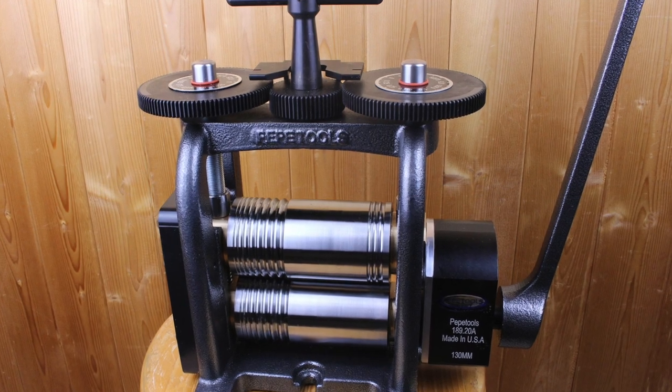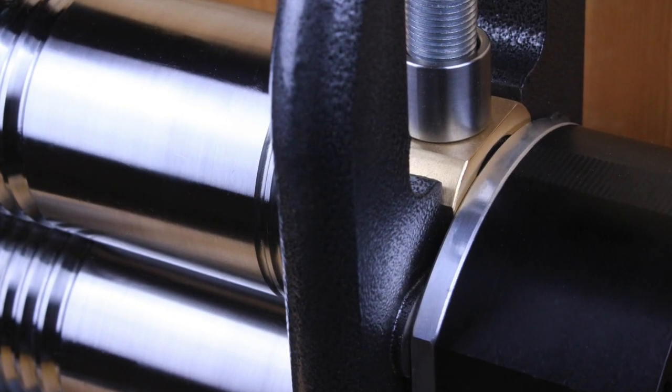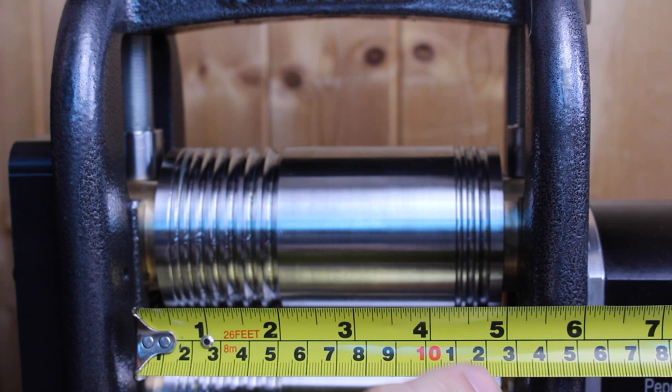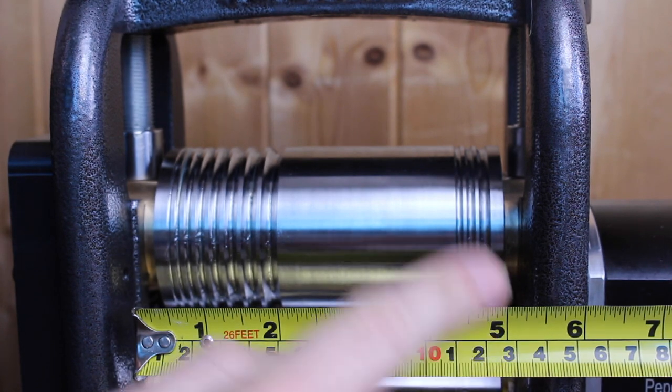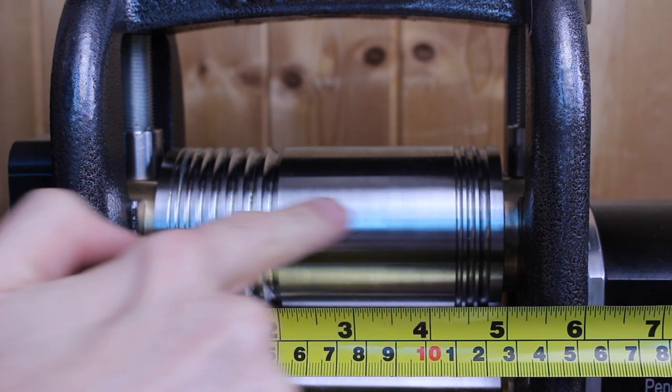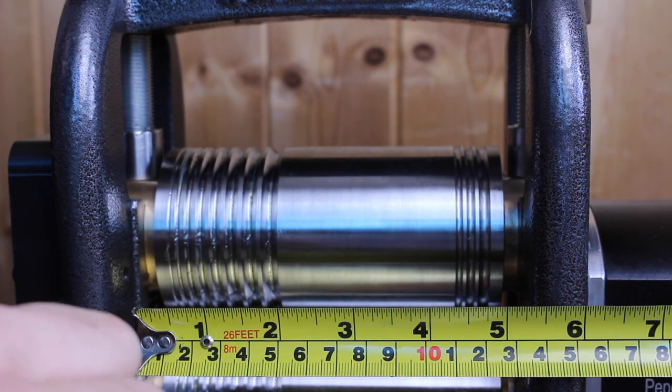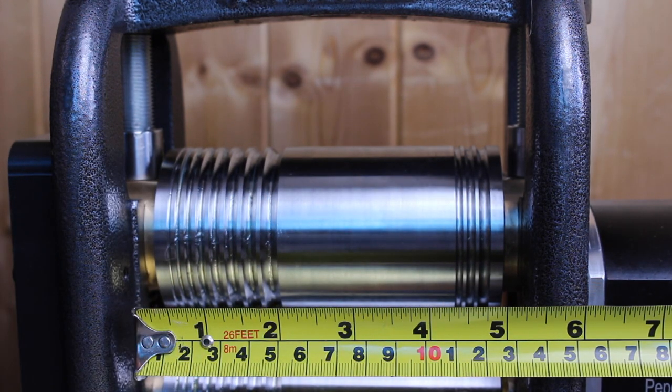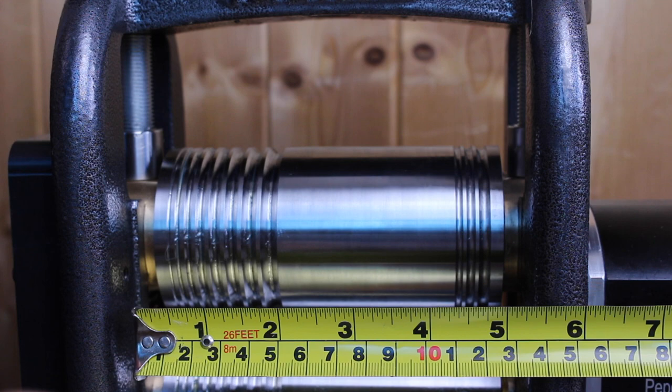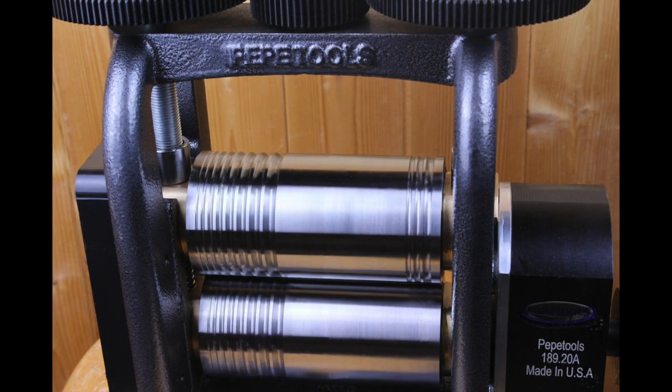So this is the all new Pepe Tools Ultra series rolling mill and Pepe have totally redesigned it to be tougher and stronger for a lifetime of use. This is the largest of the current range at 130 millimeters and this refers to the width here and this is the maximum working width of the rollers. Pepe offer a range of sizes 90 mil, 110 and this is the 130 and all sizes come with either flat rollers or combination rollers.